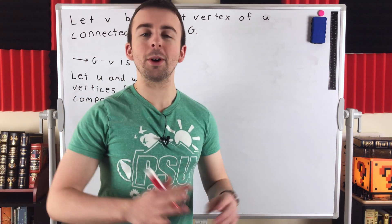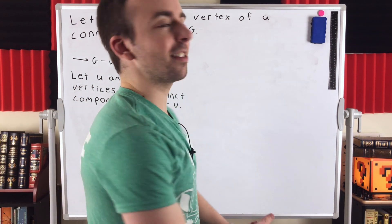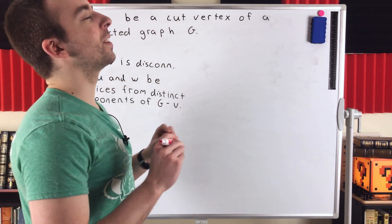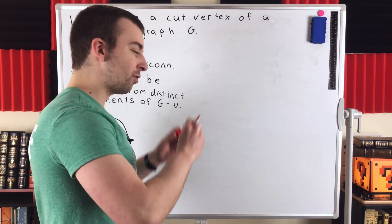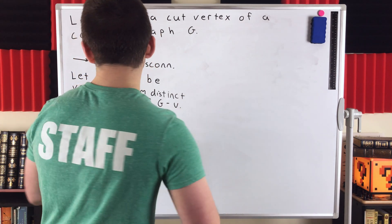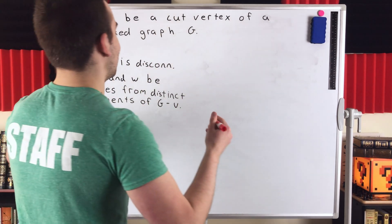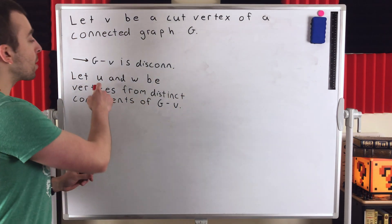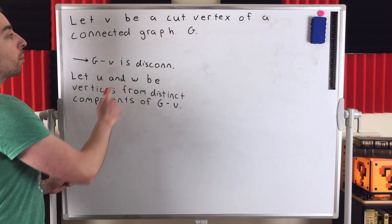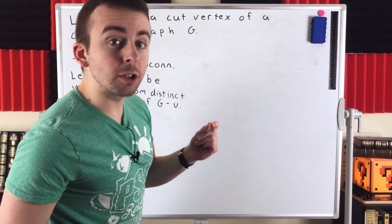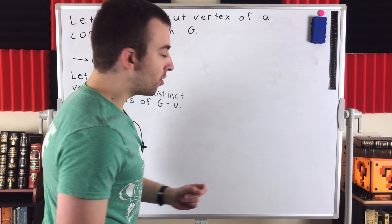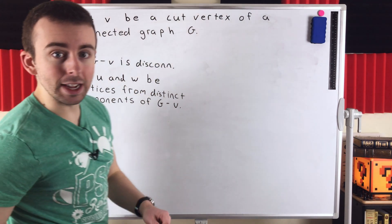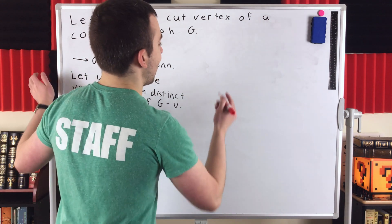Now what does this super nice theorem tell us? It tells us that every UW path in the original connected graph G must contain that cut vertex V. That's the big mic drop.